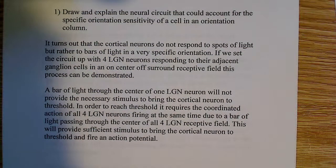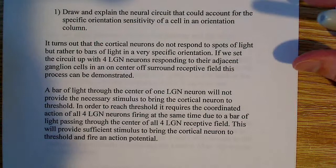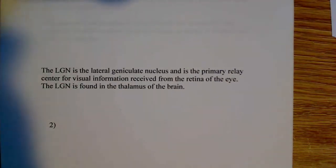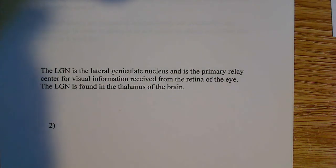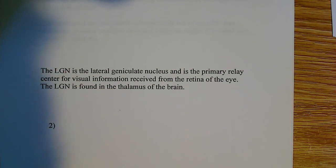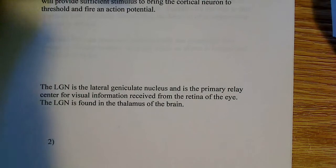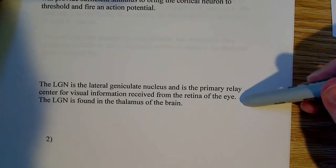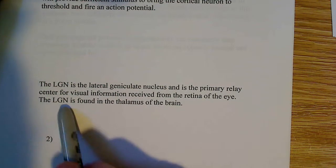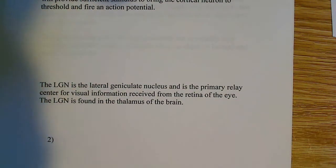So essentially, if we set up a circuit with four LGN neurons — now you might not know what LGN stands for. LGN stands for lateral geniculate nucleus. The LGN is the lateral geniculate nucleus and is the primary relay center for visual information received from the retina of the eye. The LGN is found in the thalamus of the brain. So the information is being transmitted to the retina, and from the retina this information is received by the LGN.